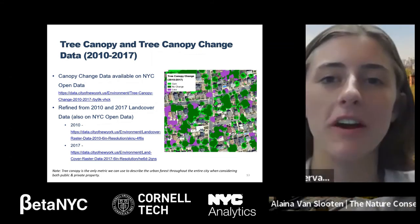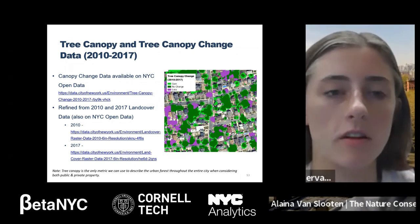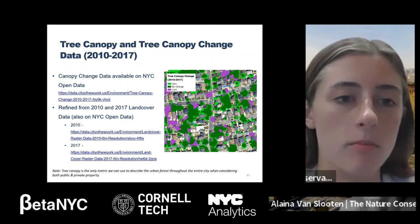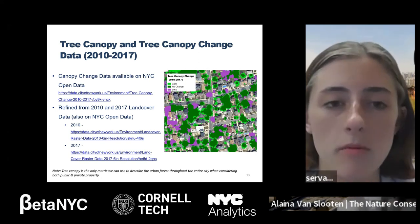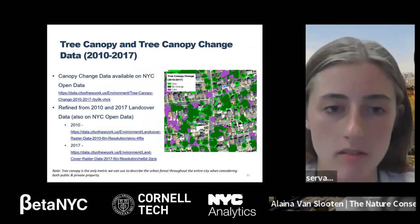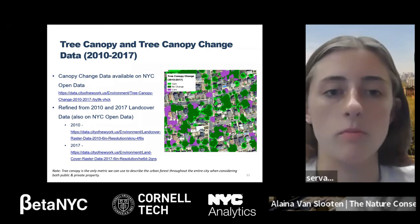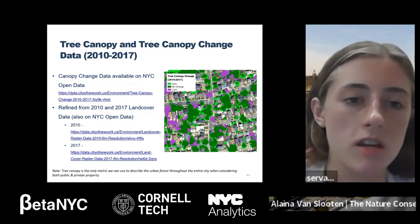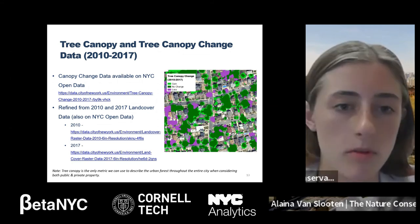Before I get into some of the findings about the urban forest in New York City, I'm going to introduce a few of the datasets that we worked with. One of the most heavily leveraged datasets in our report is Canopy Change from 2010 to 2017. This is a spatial dataset available on NYC Open Data, made up of polygons that show canopy gain, canopy without change, and canopy loss. Canopy that hasn't changed was present in both 2010 and 2017. Canopy gain was present in 2017 but not 2010, and canopy loss was present in 2010 but not 2017. From this dataset, we're able to derive both canopy change and canopy in each of those years. This dataset is refined from land cover data that is also available on NYC Open Data as a raster dataset.